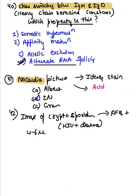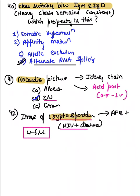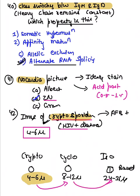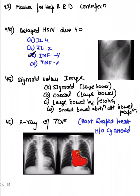An HIV-positive patient with diarrhea and oocyst size of four to six microns — that is a typical history of Cryptosporidium. The three organisms to remember are Cryptosporidium, Cyclospora, and Isospora. Cryptosporidium oocysts are 4-6 microns (round), Cyclospora are 8-12 microns (round), and Isospora are 24-36 microns (barrel-shaped). Mnemonic: double each — 4→8→24.